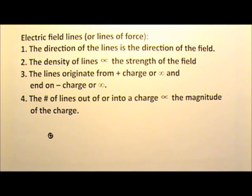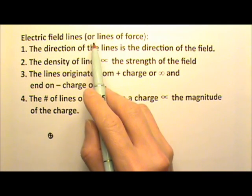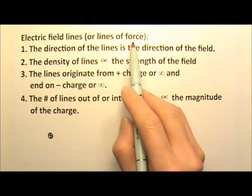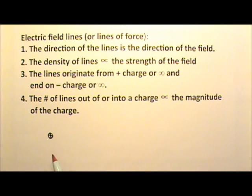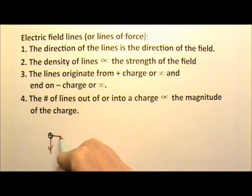Although we cannot see electric field, we can draw lines with arrows to help us visualize the electric field. Those lines are called electric field lines, or sometimes called lines of force. For example, if I have a positive point charge here, we know that the field goes away from or out of the charge, so we can draw lines coming out of the charge.